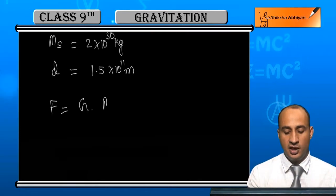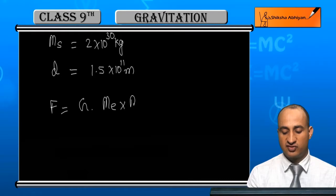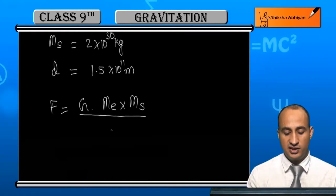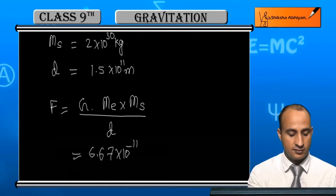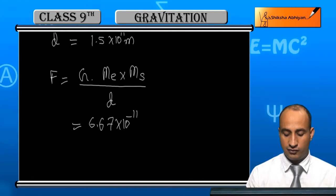The product of mass of Earth and Sun upon distance between them. The gravitational constant G = 6.67×10⁻¹¹.